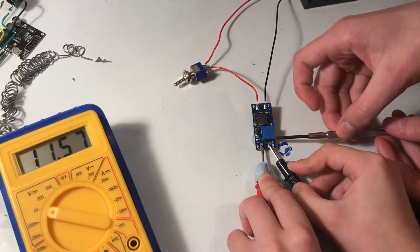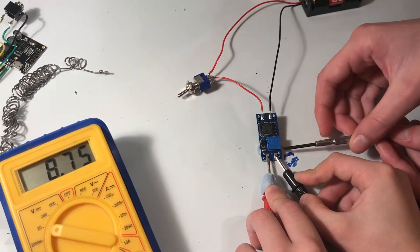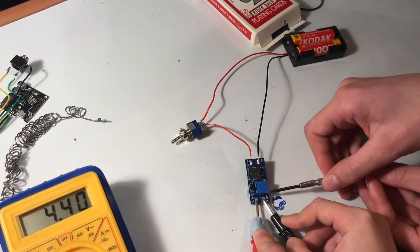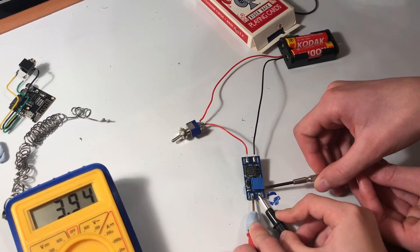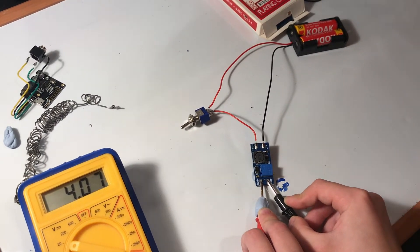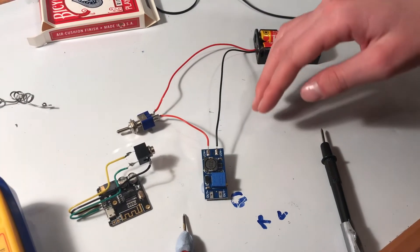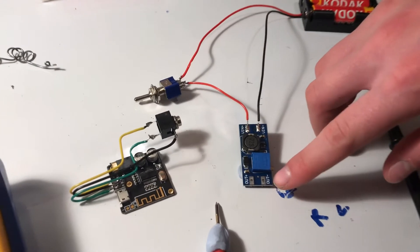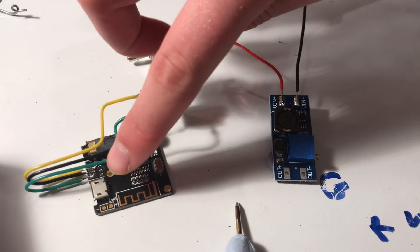So we're now stepping up our voltage to about 4 volts. And we now need to connect that up to our Bluetooth board just here.